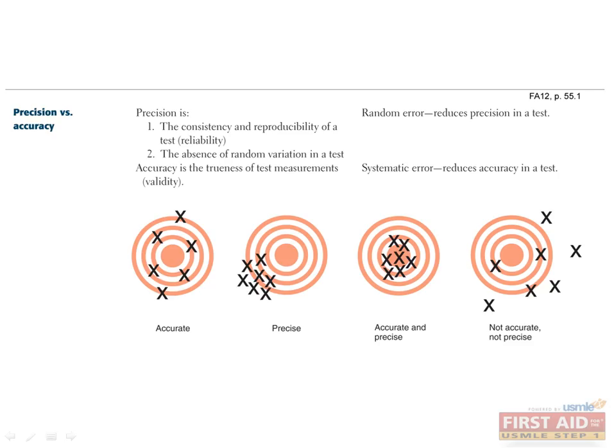In colloquial language, we often use precision and accuracy interchangeably, but they mean very different things from a statistical standpoint. Precision is the consistency and reproducibility of a test, and it also sometimes is referred to as reliability. In contrast, accuracy is a measure of how close test measurements are to the true value and is sometimes referred to as validity.